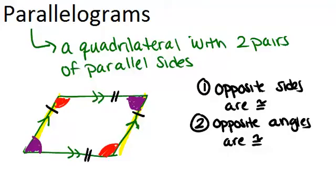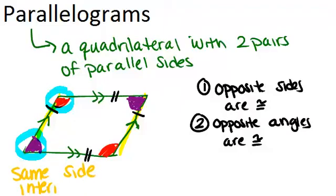Now the next property has to do with how these red and purple angles interact. Because these lines are parallel, that means that these two angles here are actually same side interior angles. Because they're on the same side of a transversal, which is this line right here, and inside parallel lines. And same side interior angles have the property that they're always supplementary, which means they add to 180 degrees.